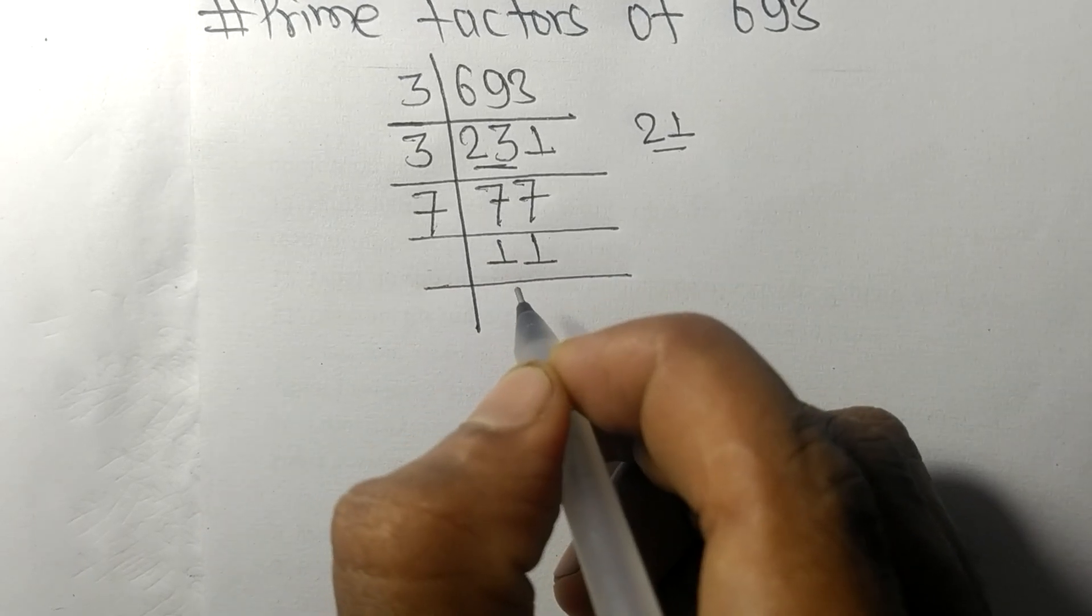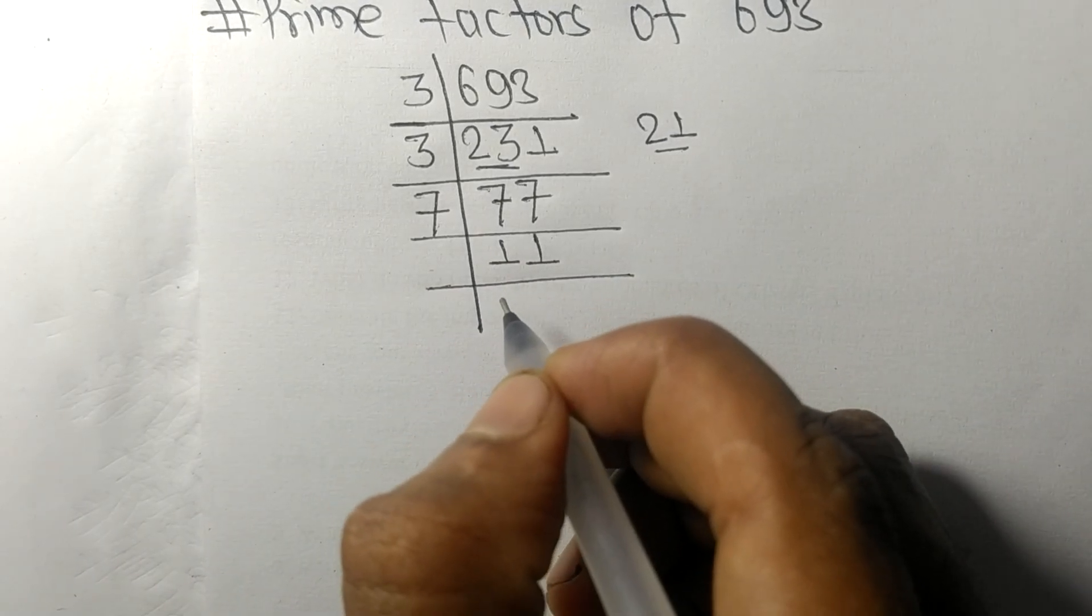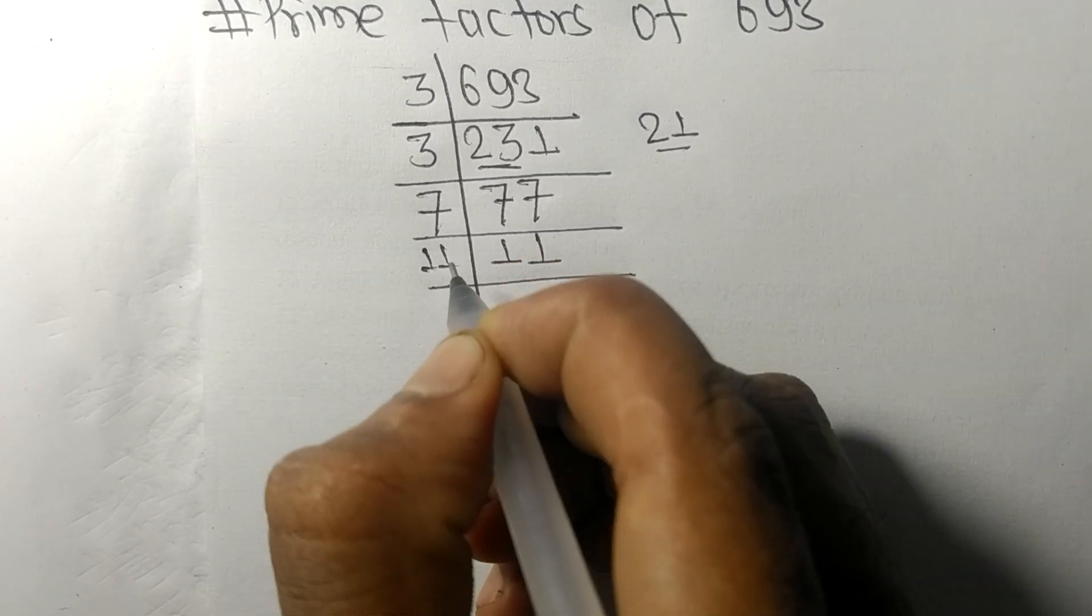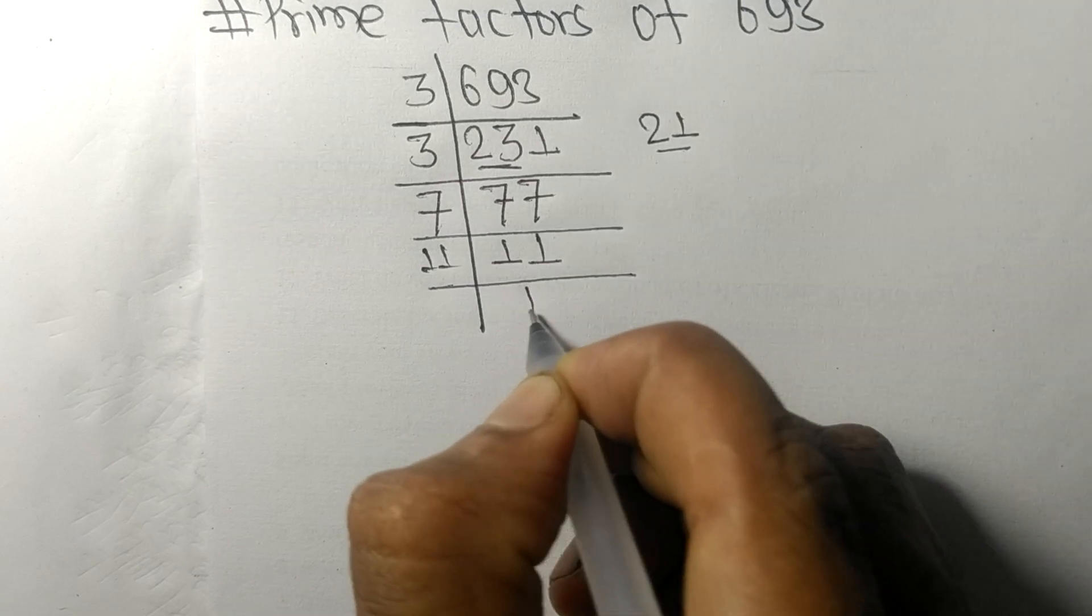Now we got 11 which is a prime number so it is divisible by 11 itself and we get here 1.